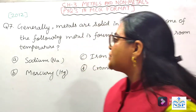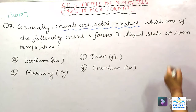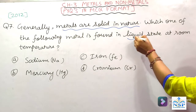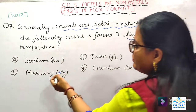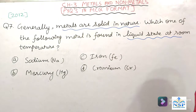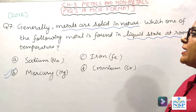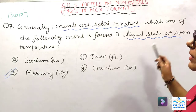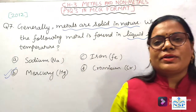Next question: generally metals are solid in nature. Which one of the following metals is found in liquid state at room temperature? Options: (A) Sodium, (B) Mercury, (C) Iron, (D) Chromium. Right answer is Mercury. Only mercury ही ऐसा metal है जो liquid form में मिलता है — ये exception है। बाकी जितने भी metals हैं वो solid form में होते हैं।